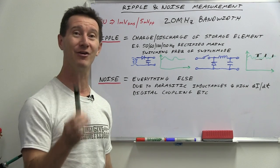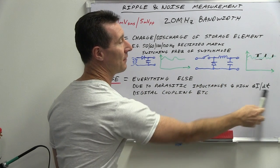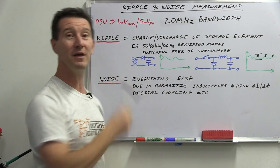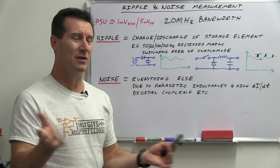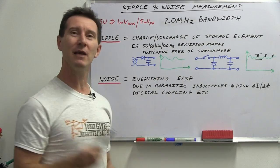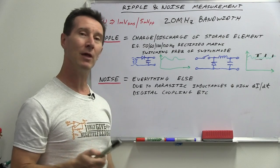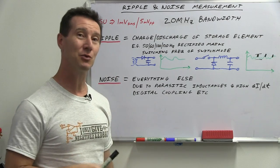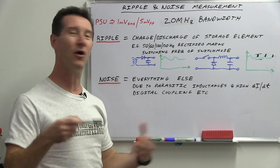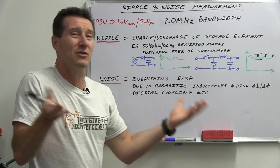They won't even specify what current the measurement is at, because ripple and noise changes with output current. There is a semi-de-facto standard of 20 MHz bandwidth. If it's not mentioned, that's what the manufacturer is pretty much telling you. The 20 MHz figure came from the fact that oscilloscopes historically had 20 MHz bandwidth limiting, so the number was picked out of the air. If you use the wider bandwidth on your scope, you'll get the wrong result.